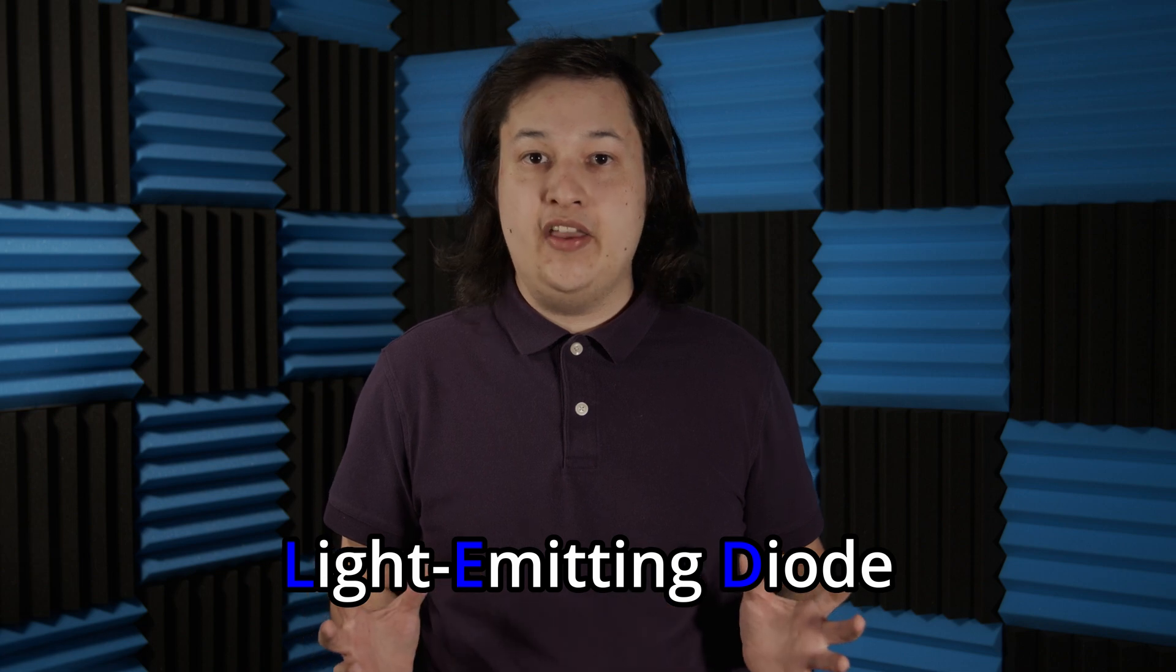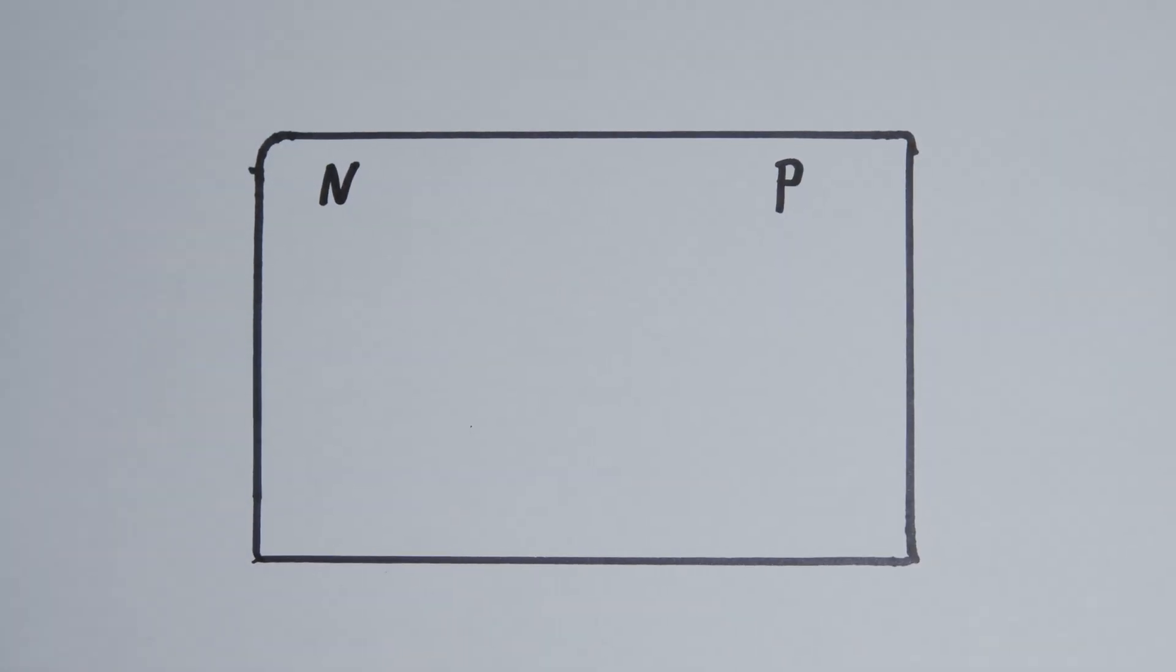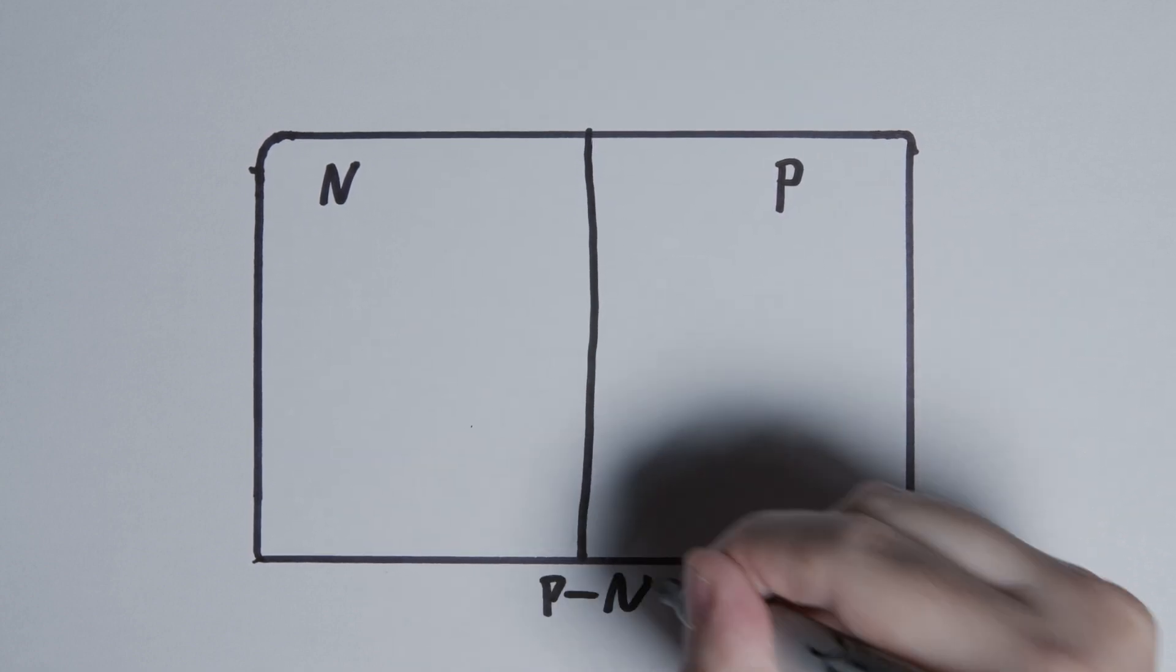LED stands for Light Emitting Diode. If we were to zoom way in and take a look at the molecular level, we would see a p-type material and an n-type material. Where these two materials come together is called the p-n junction.